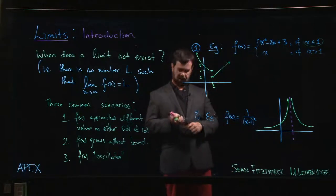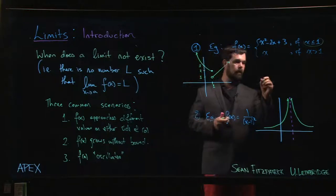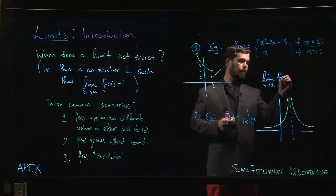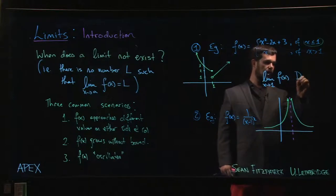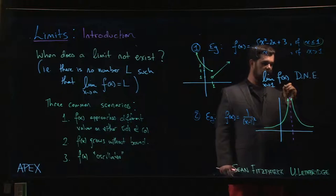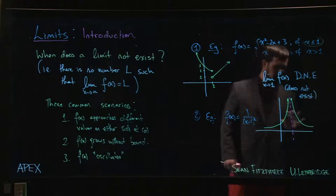So we get something that looks like this. So in both of these cases, we would have to say that the limit as x approaches one of f of x—well, we might just write this—will abbreviate does not exist as DNE.